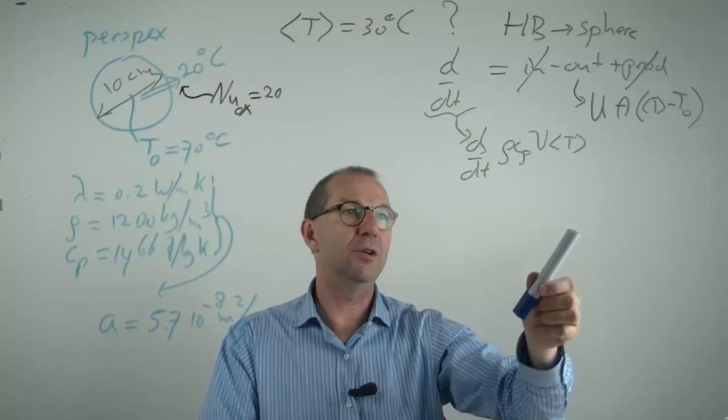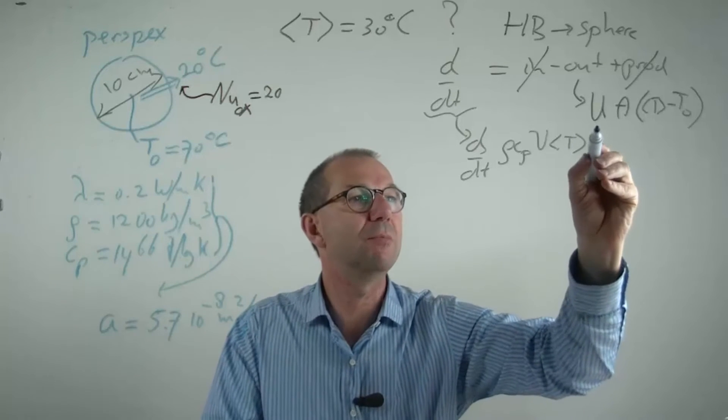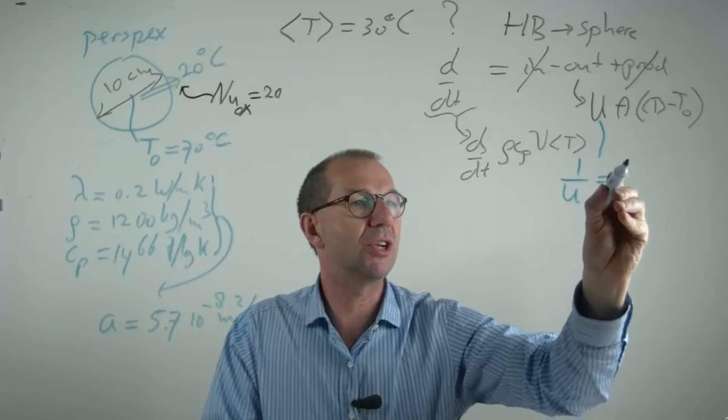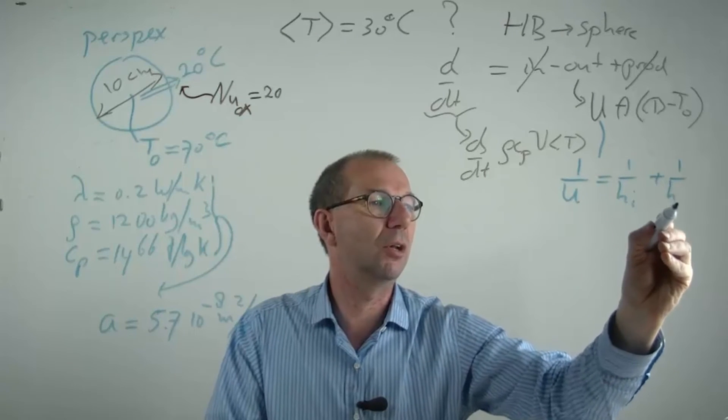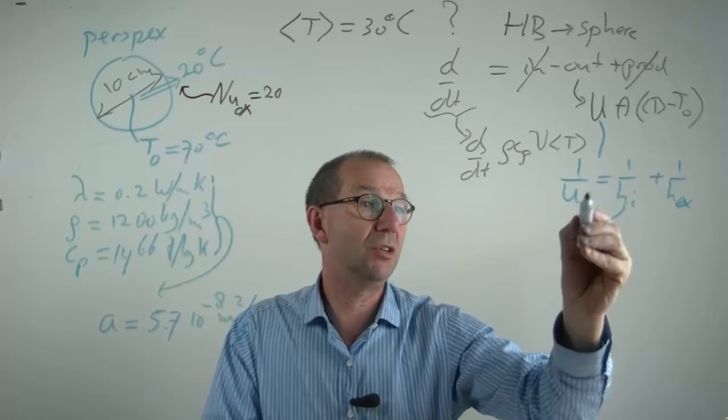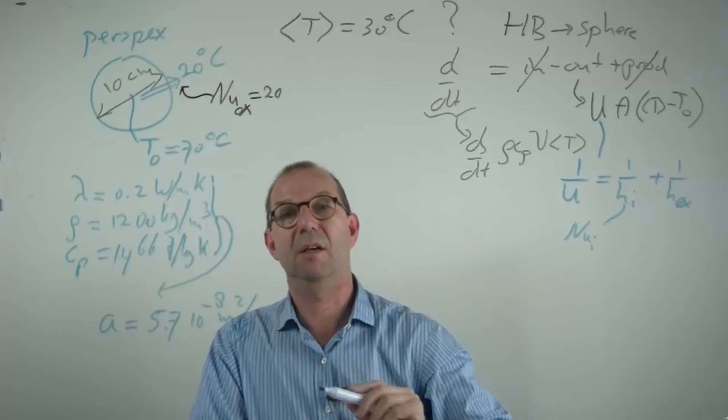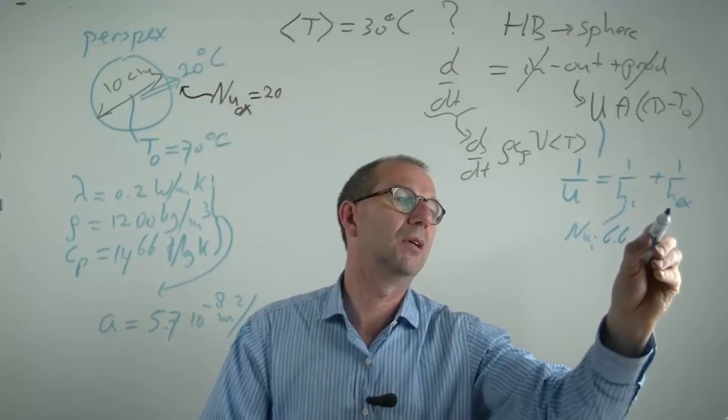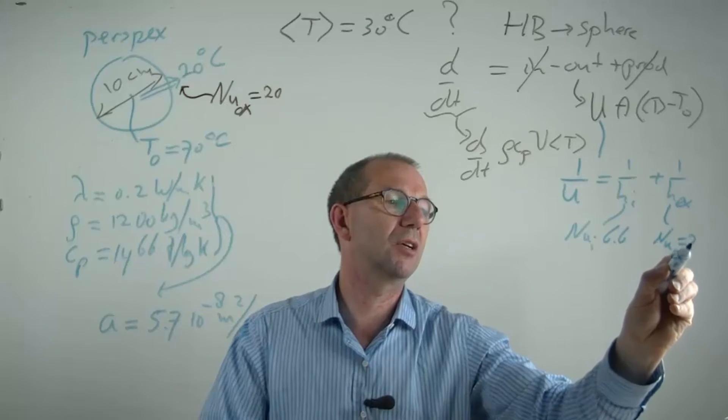Obviously, I can do that, provided that I know U. If I don't know U, then it's pretty useless. But U is 1 over the total resistance, which is the sum of the resistances internal and external. And for each I know a Nusselt number. Because this internal inside the sphere is still conduction unsteady in the sphere. So Nusselt here is 6.6. External Nusselt was prescribed in this case as being 20.